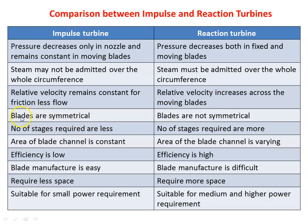In the impulse turbine, blades are symmetrical; in the reaction turbine, blades are not symmetrical. The number of stages required in the impulse turbine is less because the pressure drop and power generation per stage is higher; in the reaction turbine, more stages are required for the same power output. The area of the blade channel is constant in the impulse turbine but varying in the reaction turbine. Efficiency is lower in the impulse turbine due to higher exit velocity; in the reaction turbine, efficiency is higher. Blade manufacture is easy for the impulse turbine due to symmetrical blading, but difficult for the reaction turbine due to the aerofoil blade shape. The impulse turbine requires lesser space and is suitable for small power requirements, whereas the reaction turbine requires more space and is suitable for higher or medium power requirements.